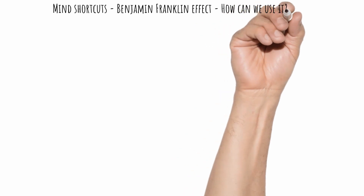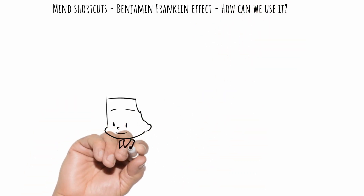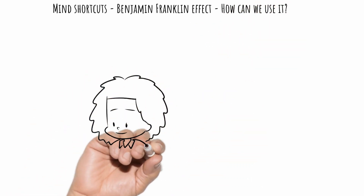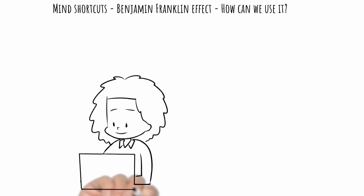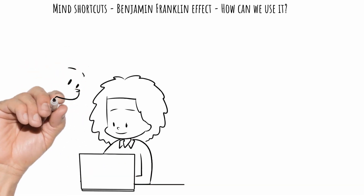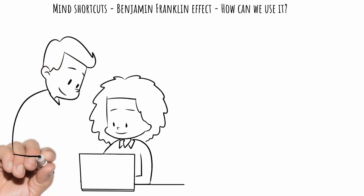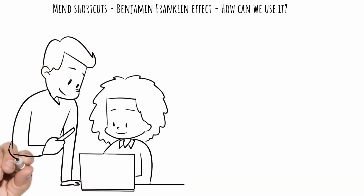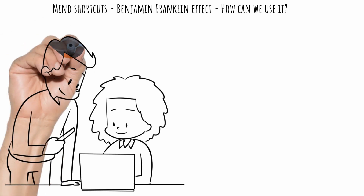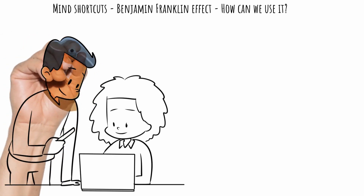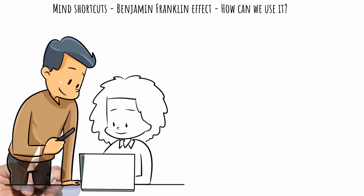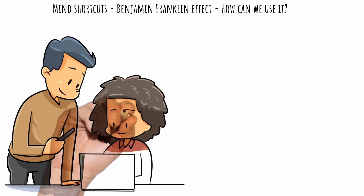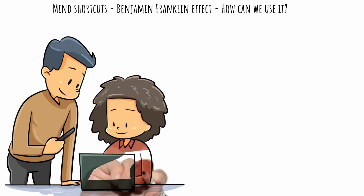How can we use it? If we have a strained relationship with our supervisor, by asking for help we can sway him or her more to our side and start to improve the relationship step by step. It does not have to be a work relationship, of course — this effect can be used anywhere.